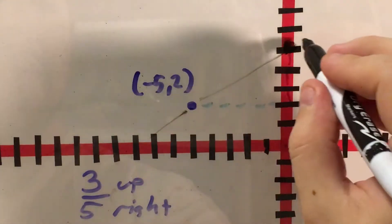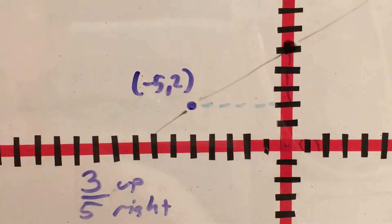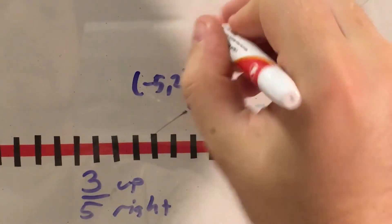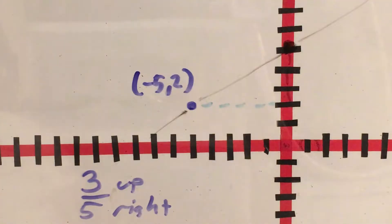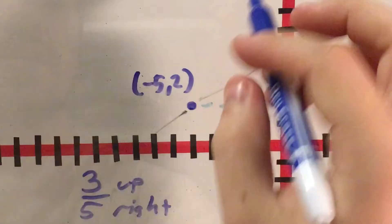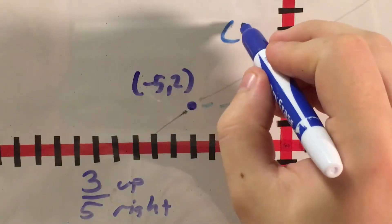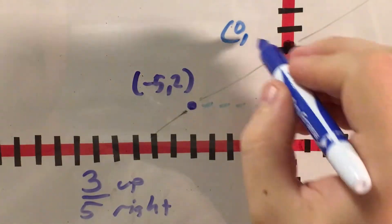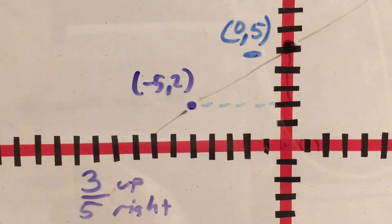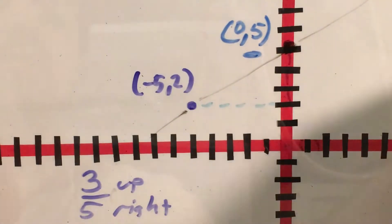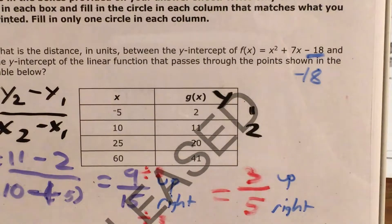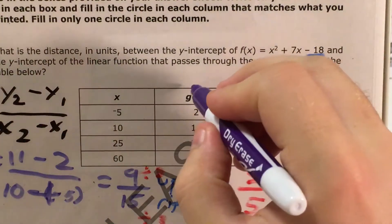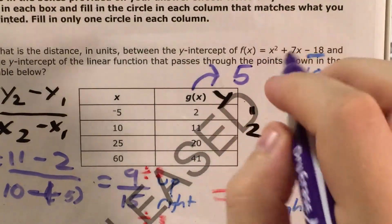That is going to put me right here — there's my line, I can keep it going in either direction. I've finally reached my y-intercept, which is the point 0 and 5. Our y-value is our y-intercept in this case. So our y-intercept of f of x was negative 18, and our y-intercept of g of x was 5.